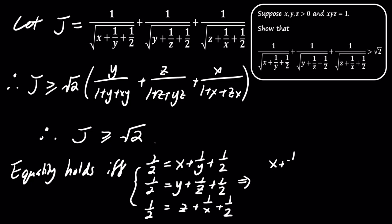However, solving the resulting system of equations leads to contradictions, such as x plus 1 over y equals 0, which is not possible for positive x and y.